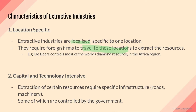For instance, looking at Africa — a company like the TNC De Beers controls most of the world's diamond resources in the Africa region. Africa is a continent that is heavily endowed with natural resources, so naturally a lot of firms from developed countries will travel to the Africa region to set up their mining factories and plants in order to extract these resources.